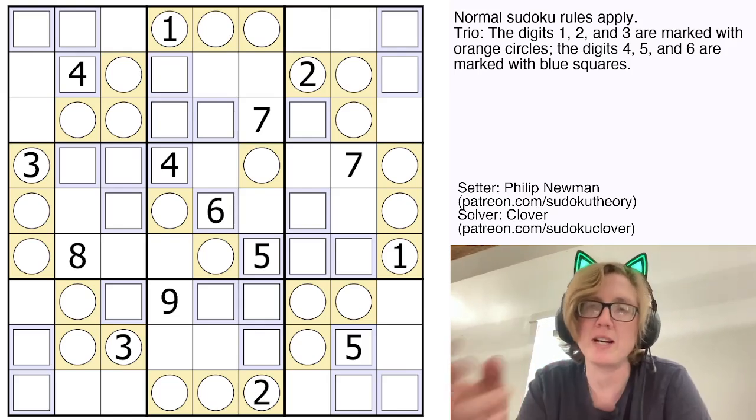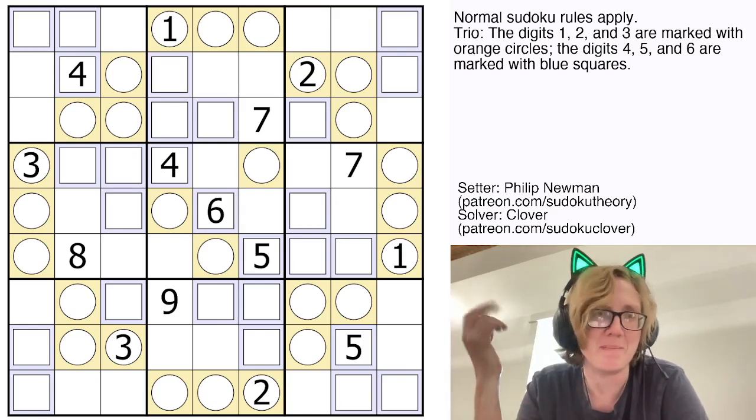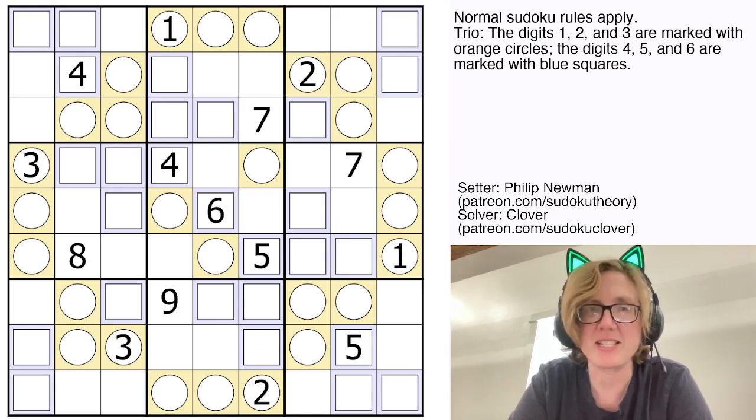And then of course the unmarked cells, which are just kind of plain white squares, can only ever contain the digits 7, 8, and 9.